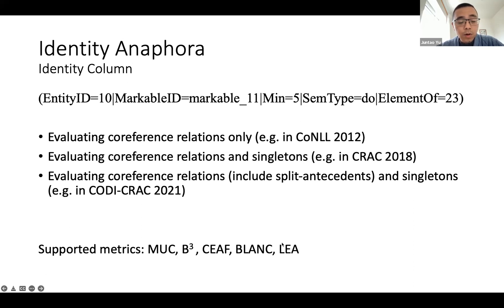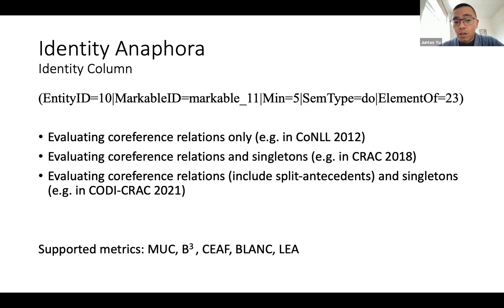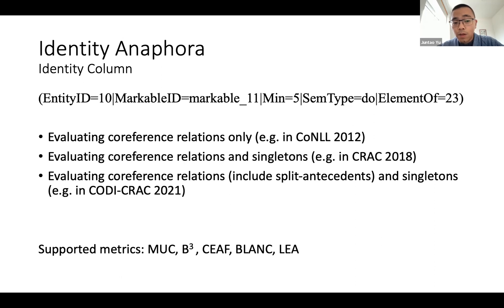Broadly speaking, the scorer can be used in three different configurations to maintain compatibility with previous scorers. It can be configured to evaluate only coreference relations, similar to CoNLL 2012 evaluation. It can evaluate coreference relations with singletons, similar to CRAC 2018. And it can also be configured to include split antecedents, following the evaluation settings of the CODI-CRAC shared task. It supports all major coreference evaluation metrics such as MUC, B-cubed, CEAF, BLANC, and LEA.